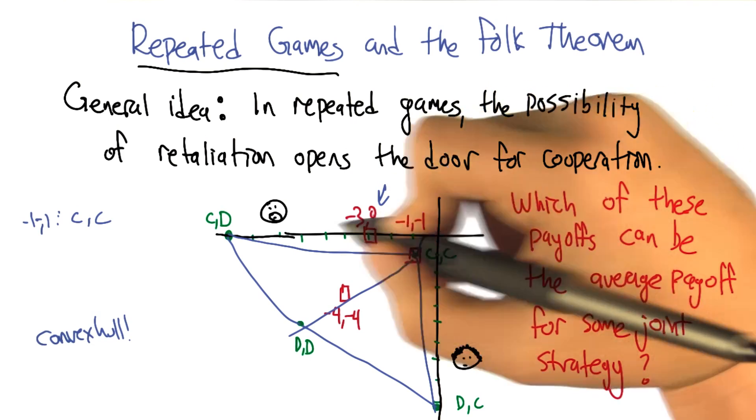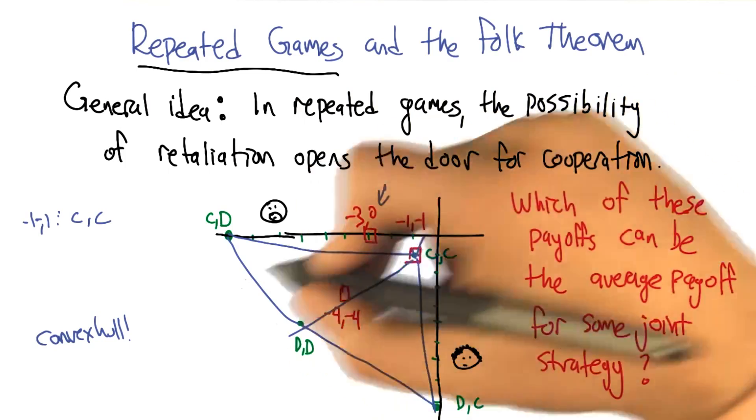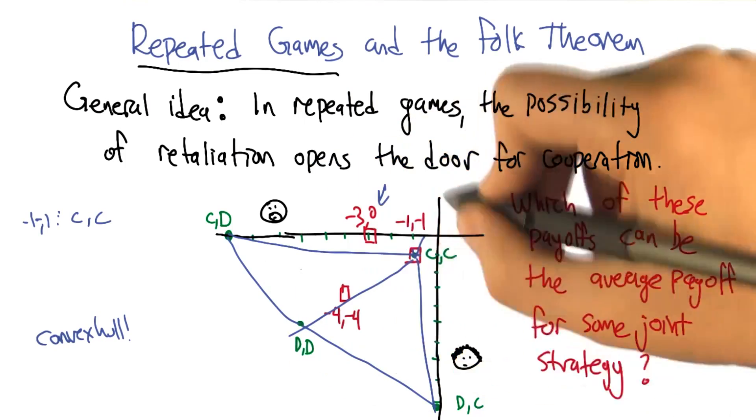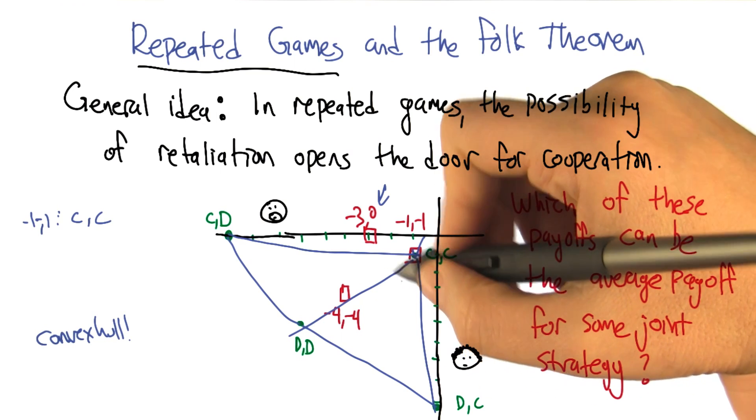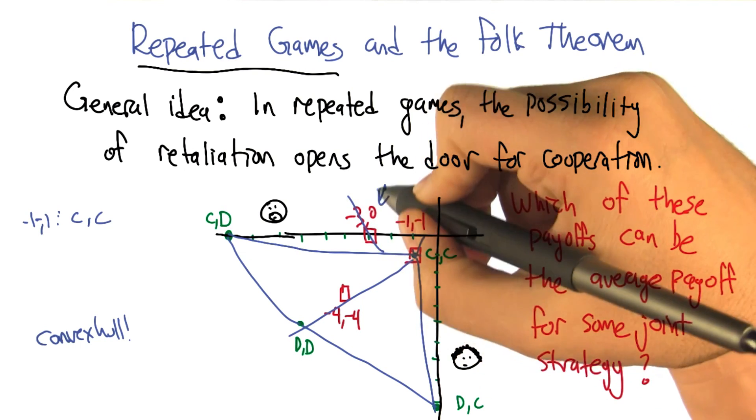Right. There's no way to make this minus three, zero. Certainly not by choosing any of these points, but also no convex combination, no probabilistic combination of them is going to do that either. Right. So this one is just right out.